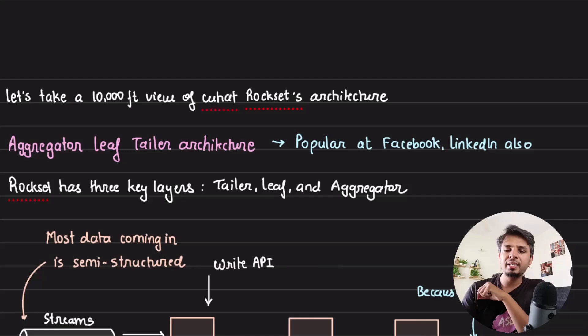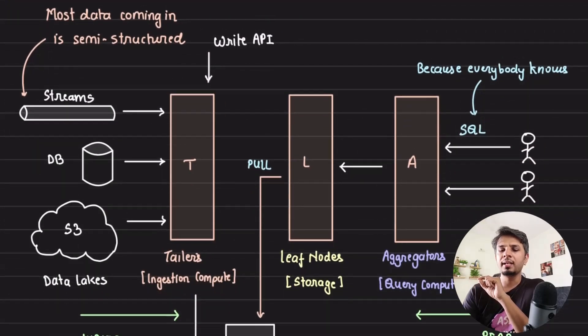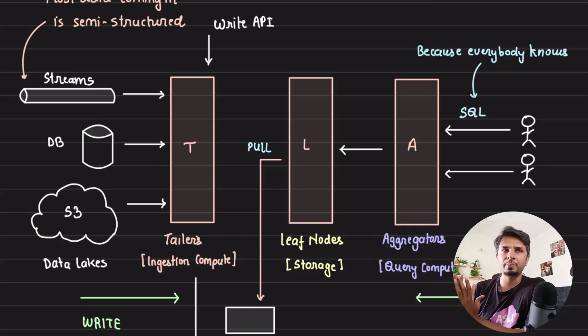Rockset is based on ALT architecture, which is Aggregator, Leaf, and Tailor. The whole idea behind this is that you have very clearly defined three layers of nodes, three layers of servers, with very well-defined scope of responsibility.